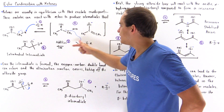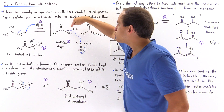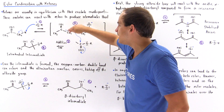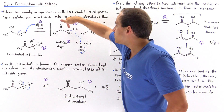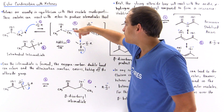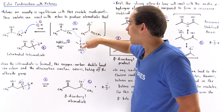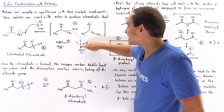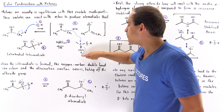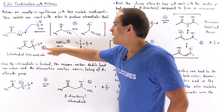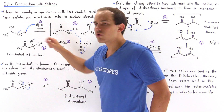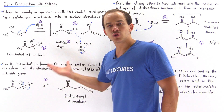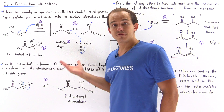So in the addition step, it's our two electrons on the alpha carbon of the ketone that nucleophilically attack the carbonyl carbon of our ester, kicking off the pi bond and placing the two electrons onto our oxygen.